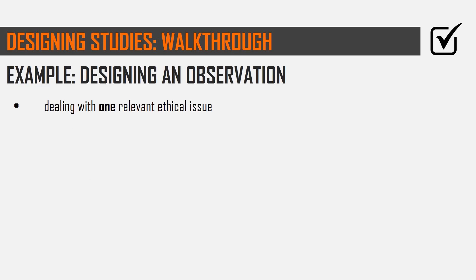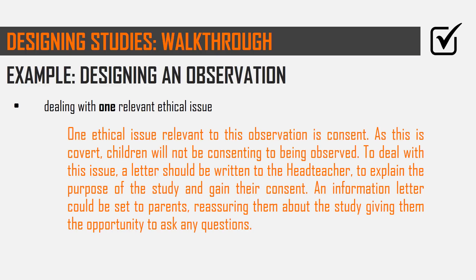Now we have one relevant ethical issue. Remember it says one, so don't bother with others — it's just not going to get you any marks. What's relevant if we're doing a covert observation of children's behavior? The first thing that comes to mind is consent, because it's a covert observation and particularly because children are involved. The focus of this bullet point is how you're going to deal with it, not just explain the issue.